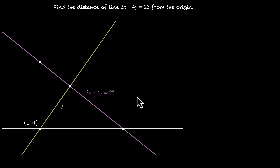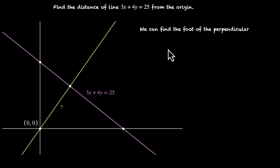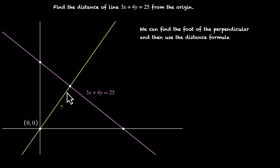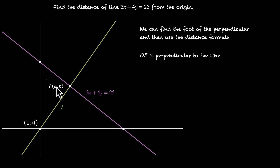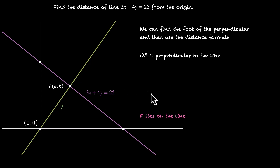So we can find the foot of the perpendicular — this point. This is Method 1: find the foot of the perpendicular, and then use the distance formula. If you know the coordinates of this point, we can find the length. So let's assume the point as (a, b). This means OF is perpendicular to the line, and OF lies on the line. So we have two relations, which means we'll get two equations, which means we'll be able to find A and B.